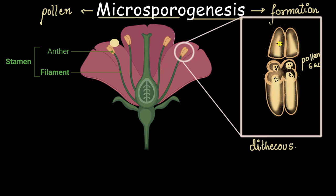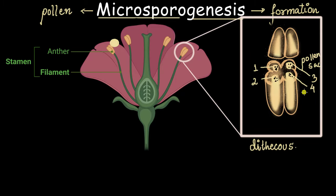Each lobe of the anther, as you can see, has two pollen sacs. This is pollen sac number one, this is number two, and in the other lobe, this is number three and this is number four. So in a dithecal anther, that means in a bilobed anther, we have four pollen sacs. I'm stressing so much about the number of pollen sacs because many exam questions are asked about the number of pollen sacs in dithecal and monothecal anthers.